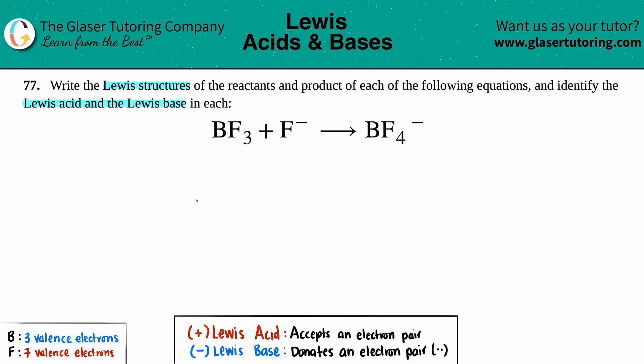So this one will be a generalized version of how to draw Lewis structures. The only thing that's new here is identifying which one is the acid and which one is the base. I wrote down here the number of valence electrons boron and fluorine have. Now we're ready to go. So let's look, BF3—remember, least electronegative is always the central atom.